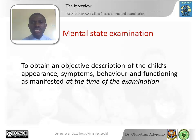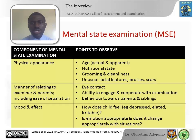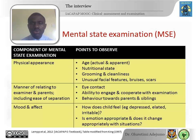It's also very important to ask questions about suicidal ideation and behavior — have they hurt themselves deliberately in the past, and was this with the intent of killing themselves or not? A mental state examination focuses on obtaining an objective description of the child's appearance, symptoms, behavior, and functioning at the time of examination. First, assess the physical appearance of the child — is it as expected for the child's age, is the child well-groomed, are there unusual features suggesting abuse like bruises and cuts?